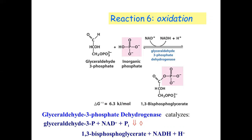Glyceraldehyde is oxidized and removes hydrogen. A phosphate is added and hydrogen is removed. NAD — which we have studied — accepts that hydrogen. So hydrogen is added to NAD and the product is glyceraldehyde with phosphate added, forming 1,3-bisphosphoglycerate.